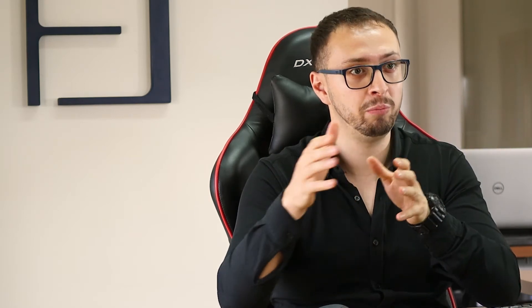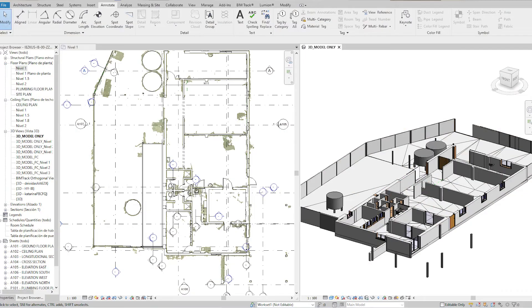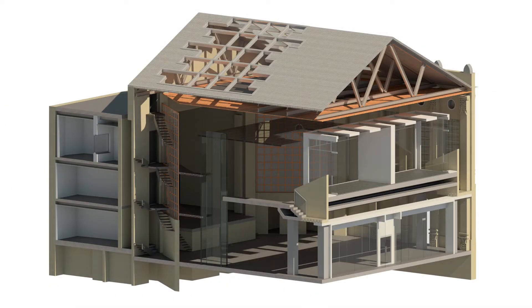LOD refers to individual components in a BIM model that have a certain level of information — graphical, non-graphical, and documentation. When you build a digital model, depending on the phase you are in or the needs, a client might say I just need a graphical representation, or I need a construction model I can actually use to build — so I want quantities, I want the digital asset, and I want the information to be correct so the contractor can directly use it.